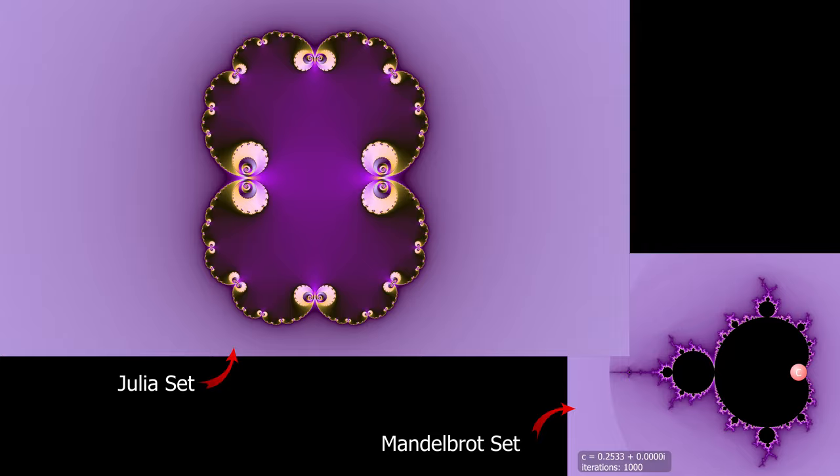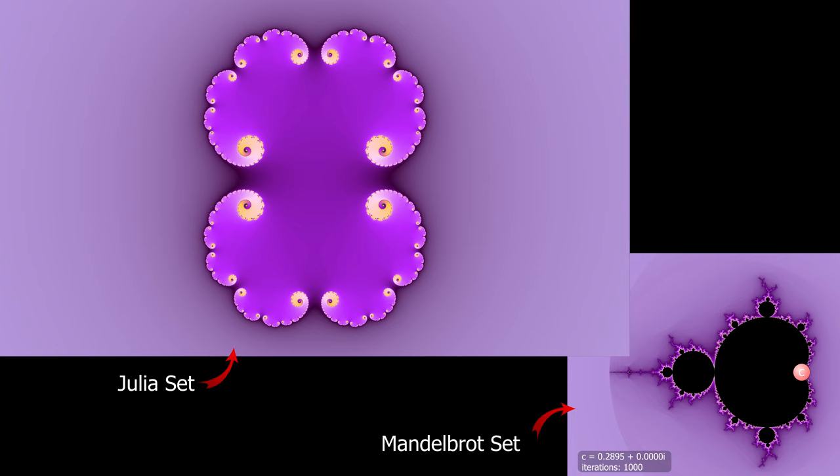If we pick a value of C outside the Mandelbrot set, the corresponding Julia set will be infinitely disconnected. And this is actually the definition of the Mandelbrot set.